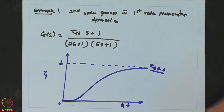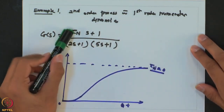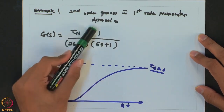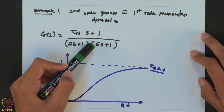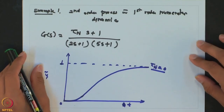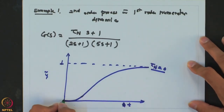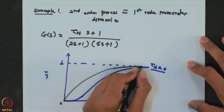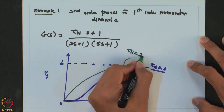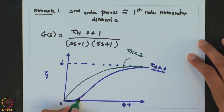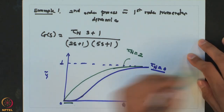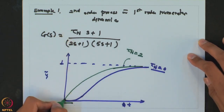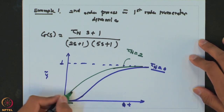When τₙ = 2, the numerator (2s+1) cancels with the denominator term (2s+1), leaving 1/(5s+1) — the system behaves like a first order system with time constant 5. When τₙ = 5, similarly (5s+1) cancels, leaving 1/(2s+1), which is significantly faster. As τₙ increases from 0, the initial slope becomes non-zero and the system reacts to the step change immediately, unlike the sigmoidal response when there were no numerator dynamics.